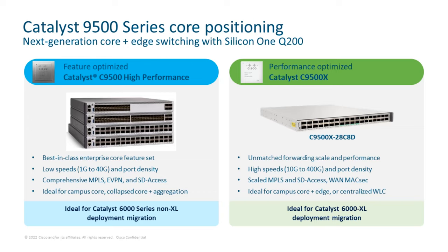With the VOQ architecture, hybrid buffering, and high route and MAC scale, the 9500 X can now be positioned as a core or spine-and-hub device. The 9500 High Performance switches are not going anywhere — we will continue to develop and support them, making them ideal for lower speeds and lower port density networks and for customers upgrading from 6500 or 6880 deployments. For 6500 or 6880 XL deployments, however, the higher scale numbers of the 9500 X make it an ideal choice.